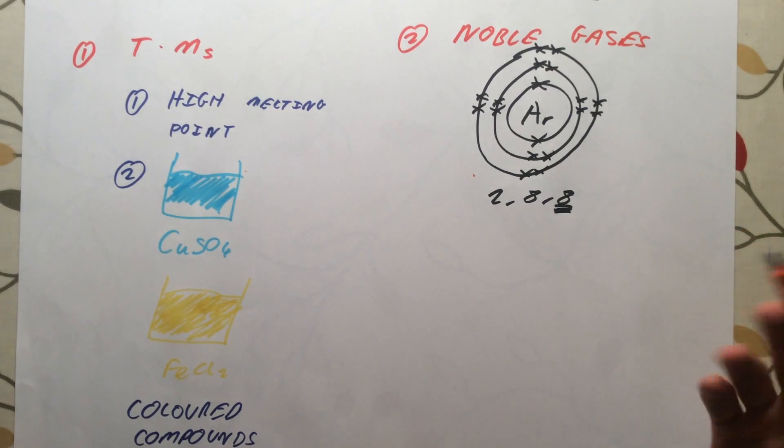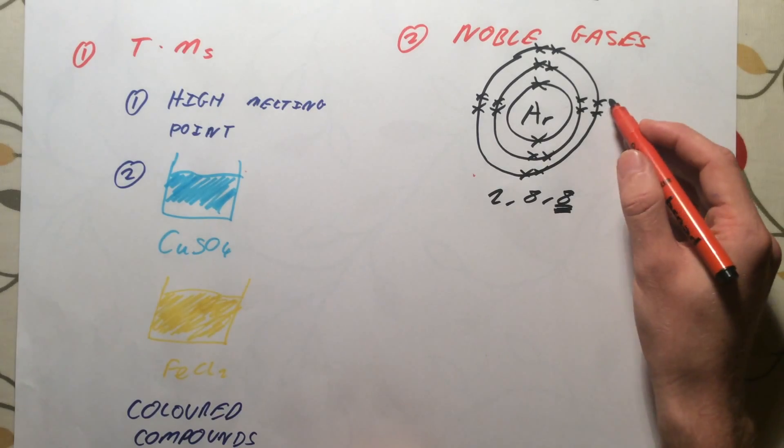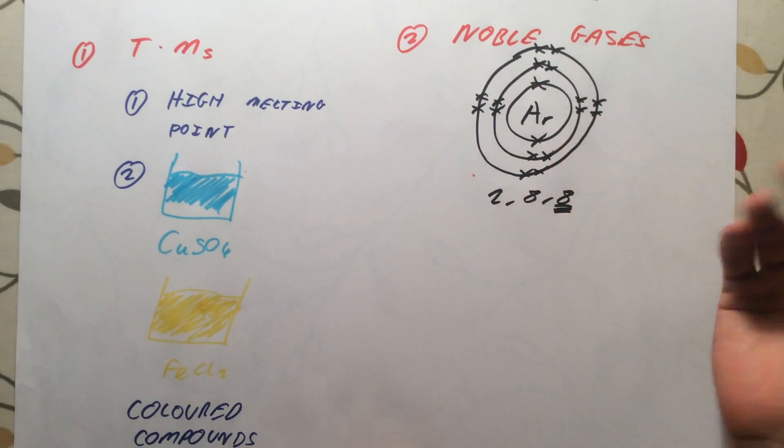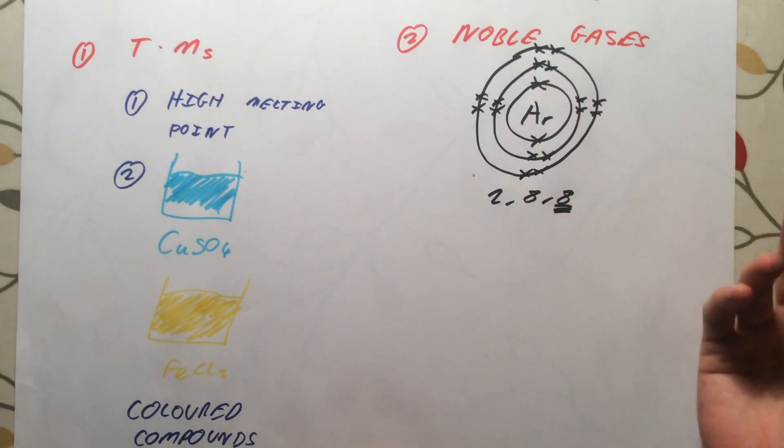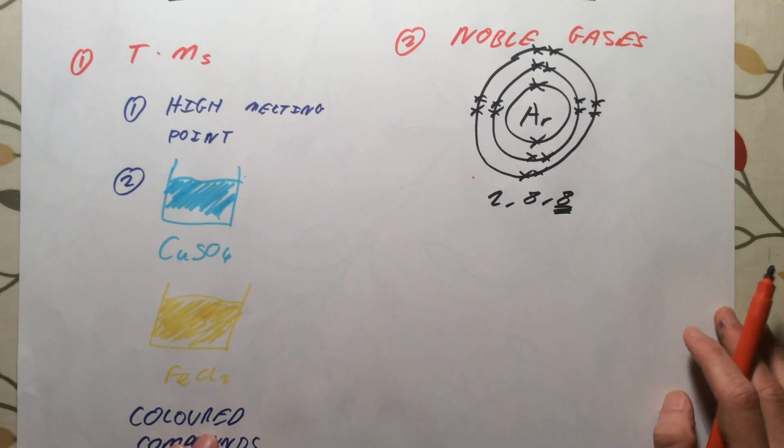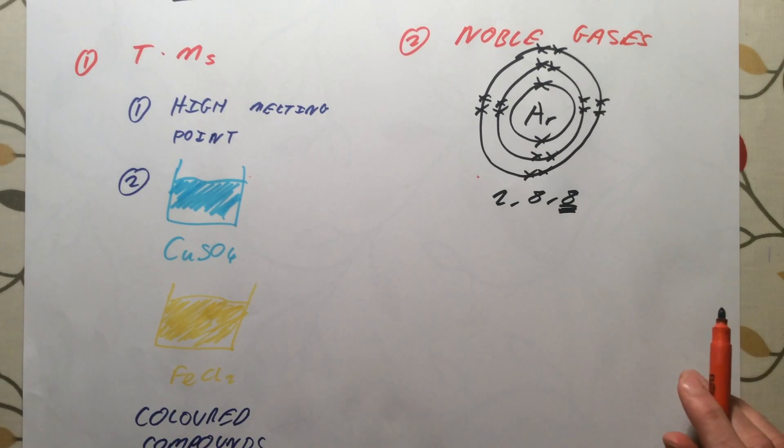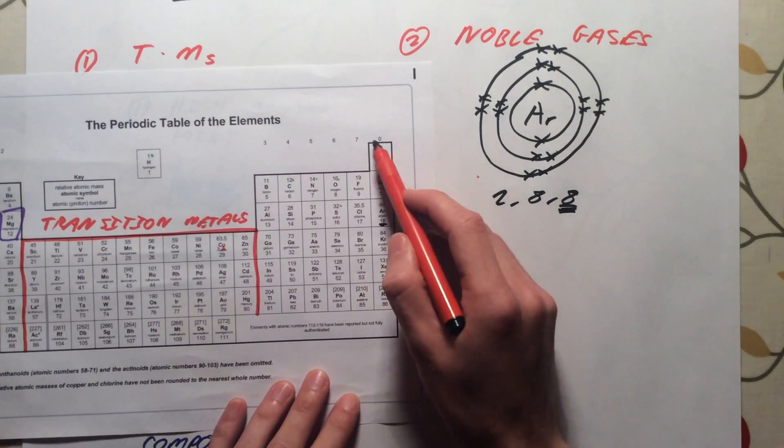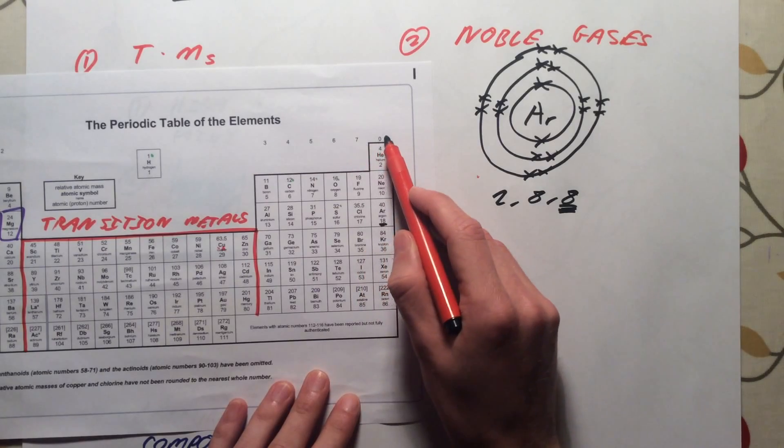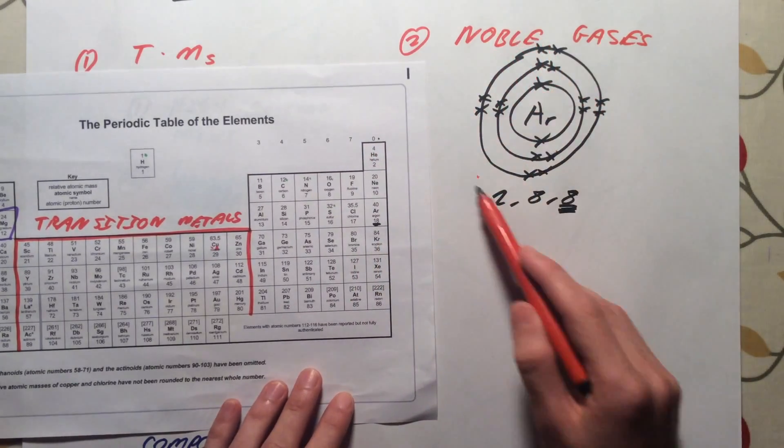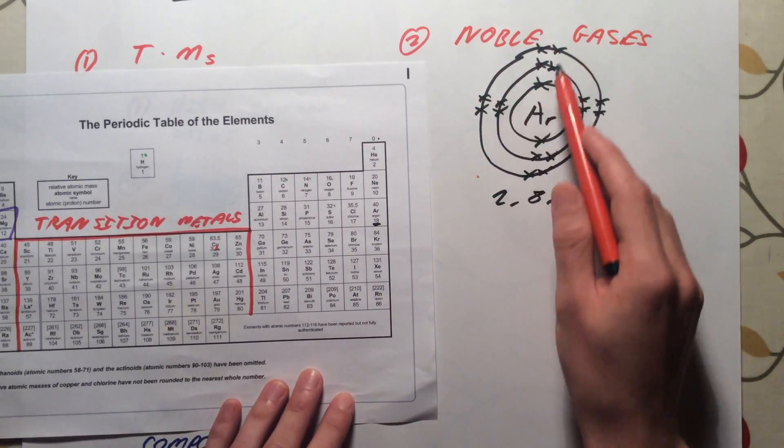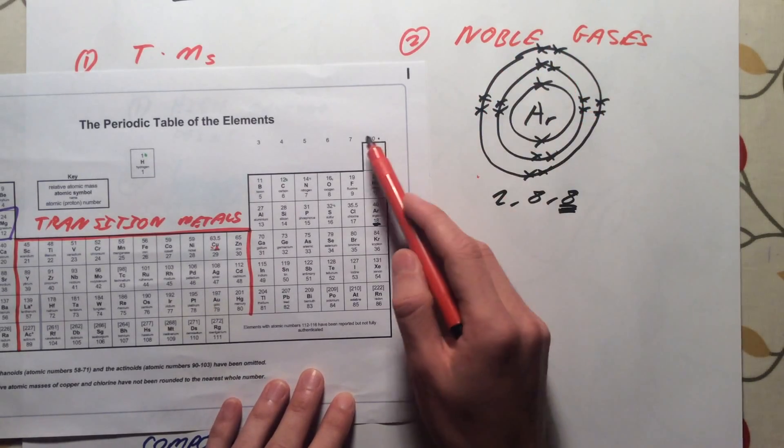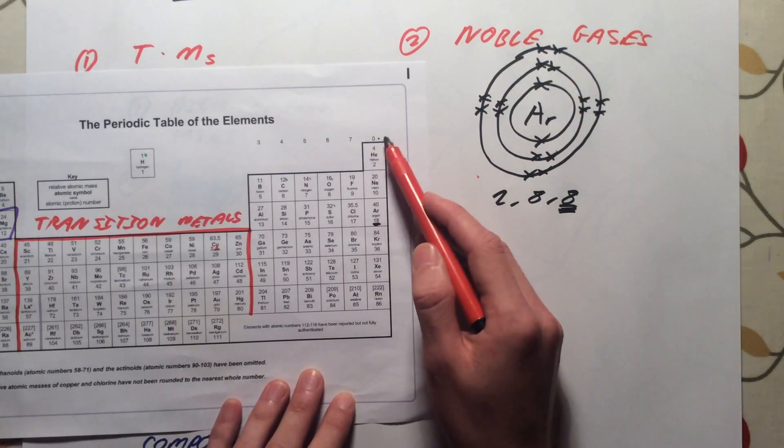This is why they are noble, they do not react, they do not want to gain, and they do not want to lose electrons. They are already happy and stable, therefore they're just going to float around on their own as single atoms, and they're not going to really react with anything, unless you really force them to. Just a quick note, on the periodic table, we call it group 0. That is because if you were to draw another shell outside of this shell of electrons in it, then that outer shell would have no electrons in it. That's why we sometimes refer to them as being group 0.